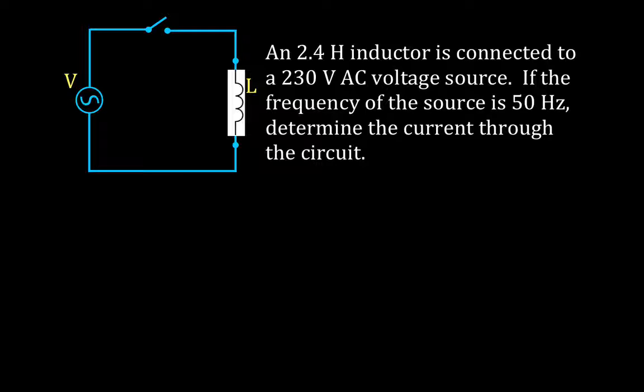This is the situation we have. We have a 2.4 Henry inductor and it's connected to a 230 volt AC source. And if the frequency of the source is 50 hertz, what is the current in the circuit?